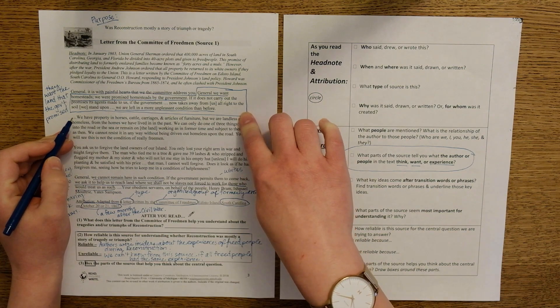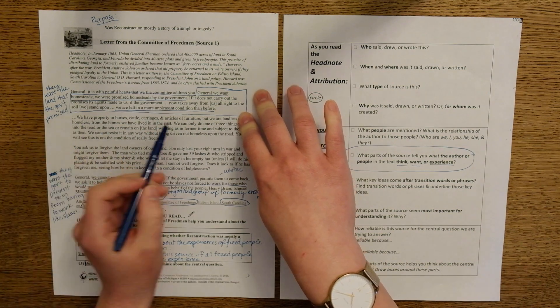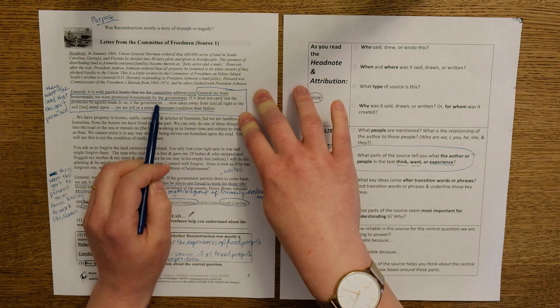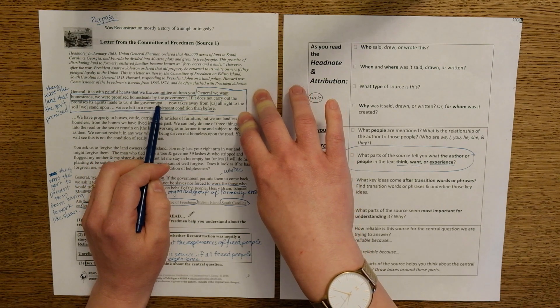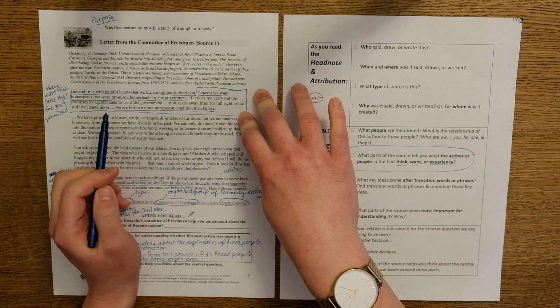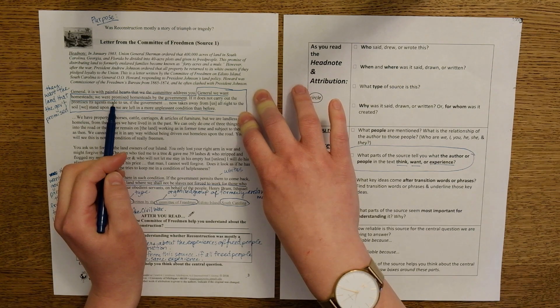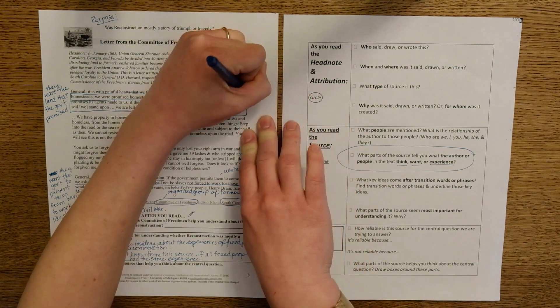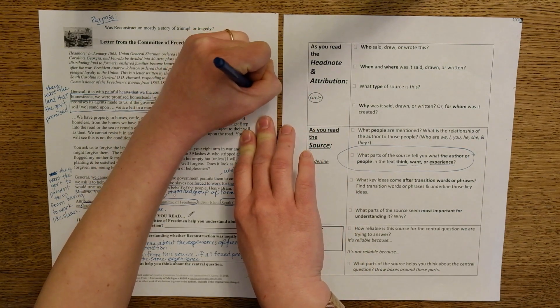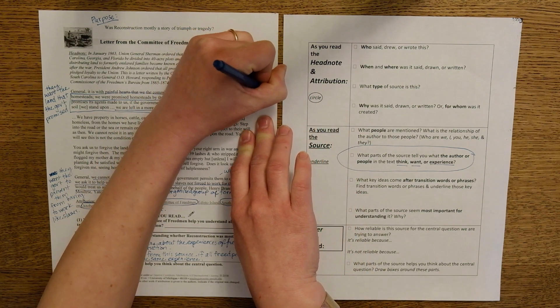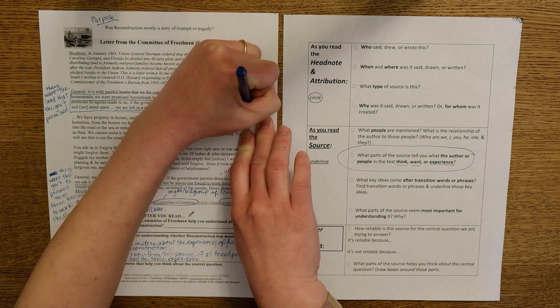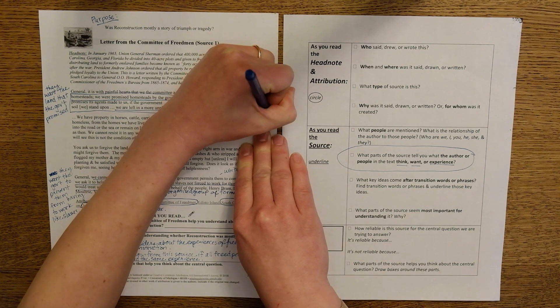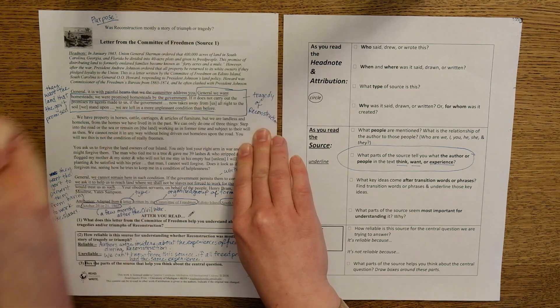This helps me think about the central question because the government promised to give land to freed African-American men and women. And this is telling me that the government hasn't done this yet. And if that's the case, then this is a tragedy of reconstruction. The government not fulfilling or following through with its promise.